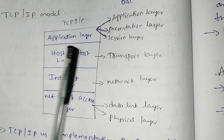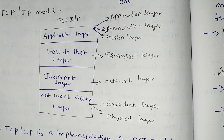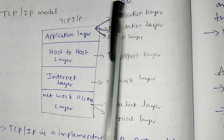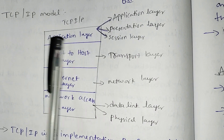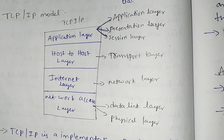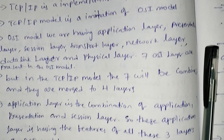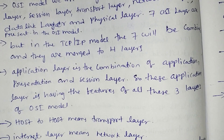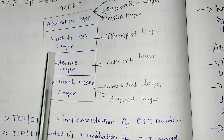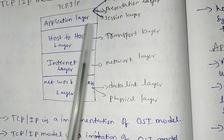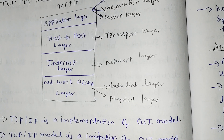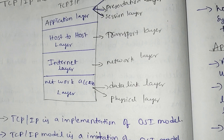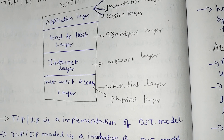So the first layer is the application layer, which is the combination of the application layer, presentation layer, and session layer from the OSI model. The host-to-host layer corresponds to the transport layer — this is the heart of the TCP/IP model.